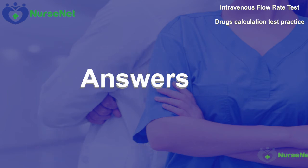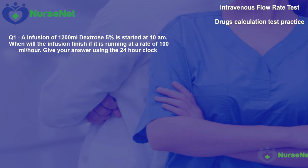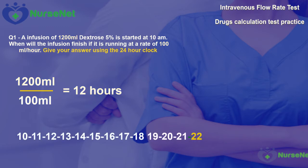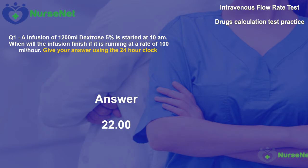Let's take a look at the answers. Question 1. An infusion of 1200 millilitres dextrose 5% is started at 10am. When will the infusion finish if it's running at a rate of 100 millilitres per hour? We should work out that if we divide the 1200 millilitres by 100 millilitres per hour, that gives us the total number of hours required — so 12 hours. We need to put this into the 24-hour clock, starting at 10am. Simply add 12 hours: 10, 11, 12, 13 and so on until we get to 22, or 10pm.